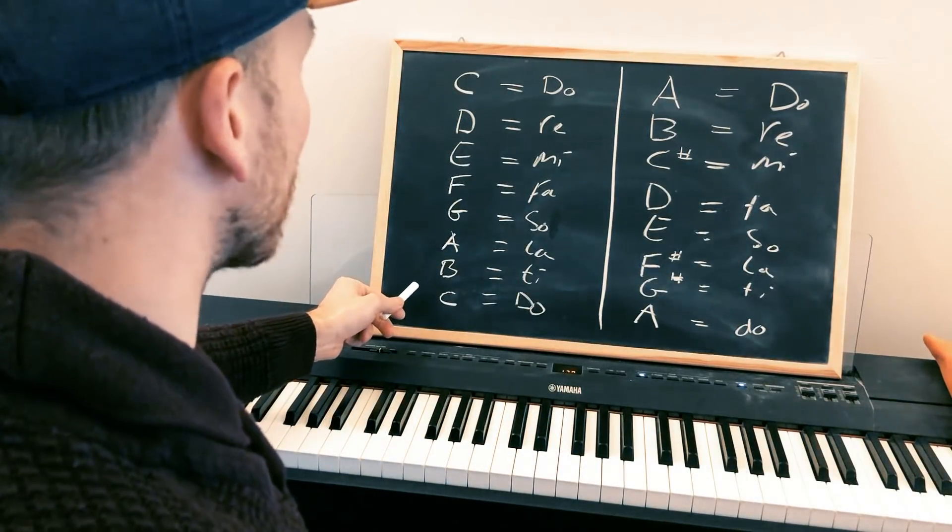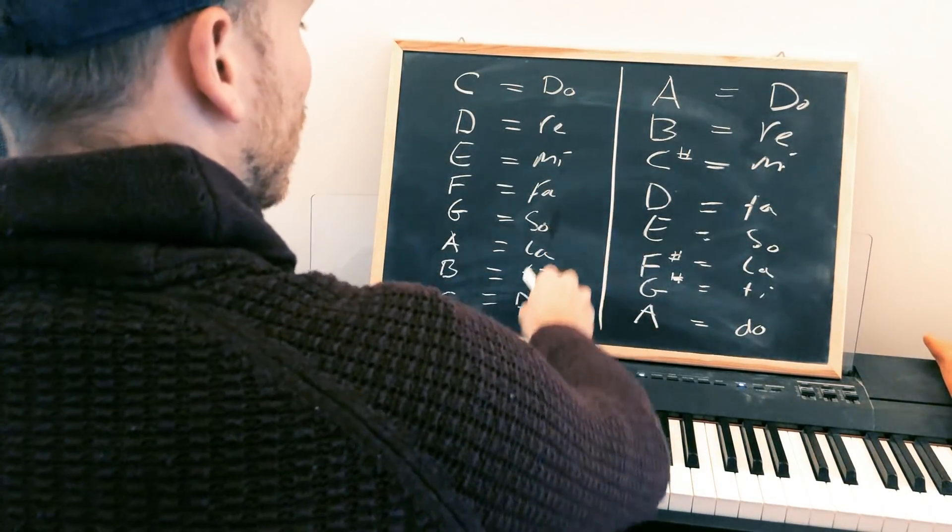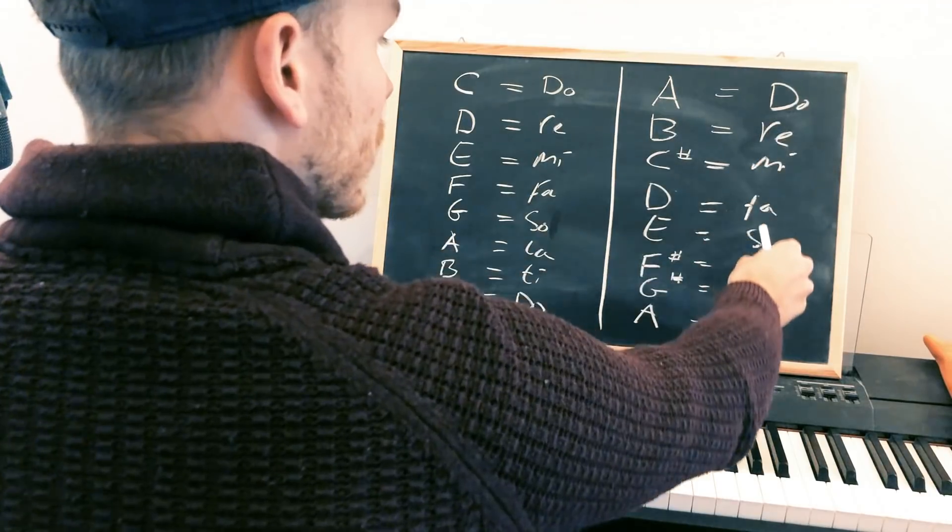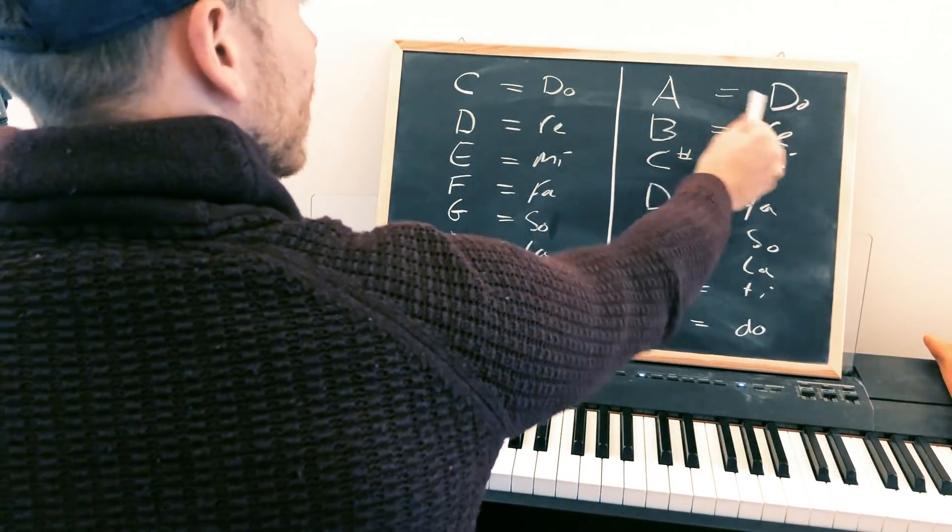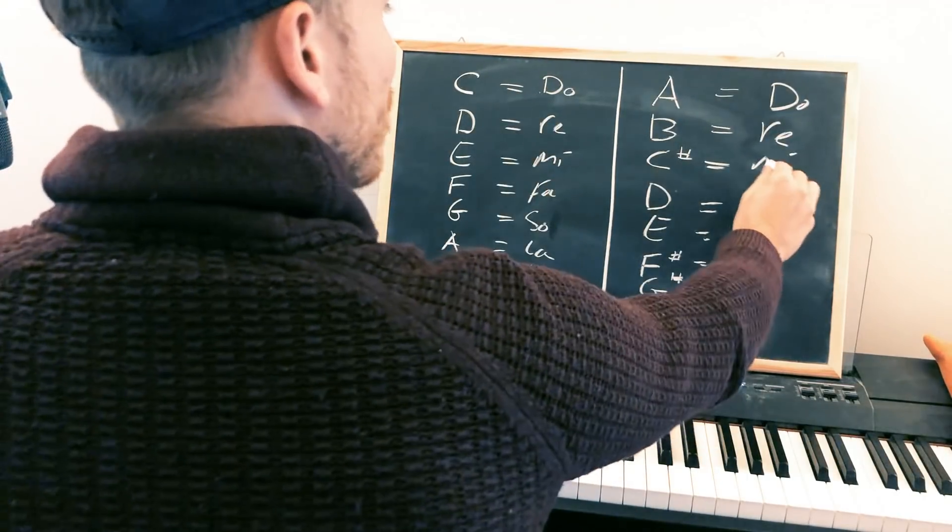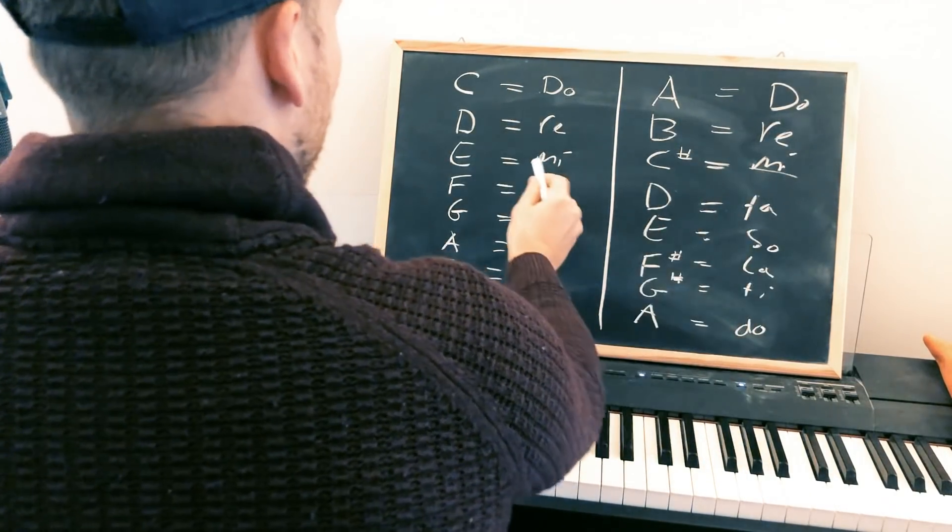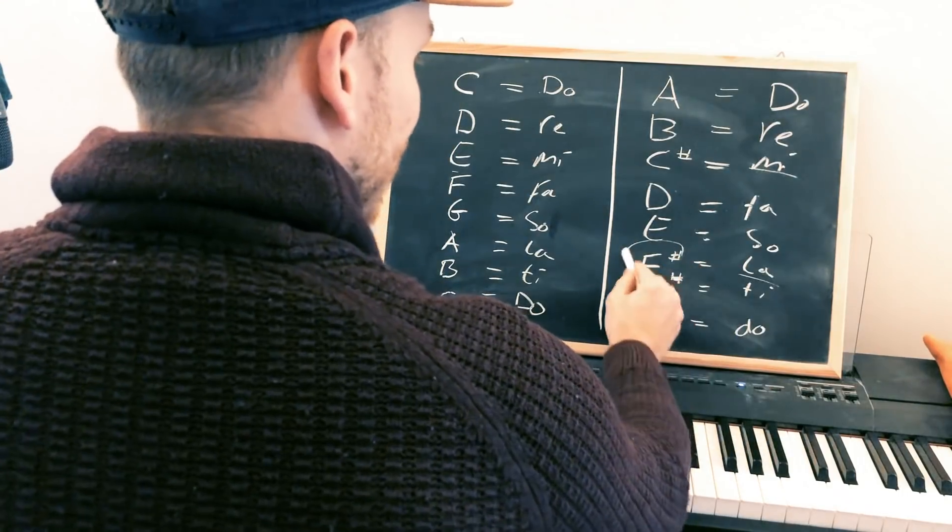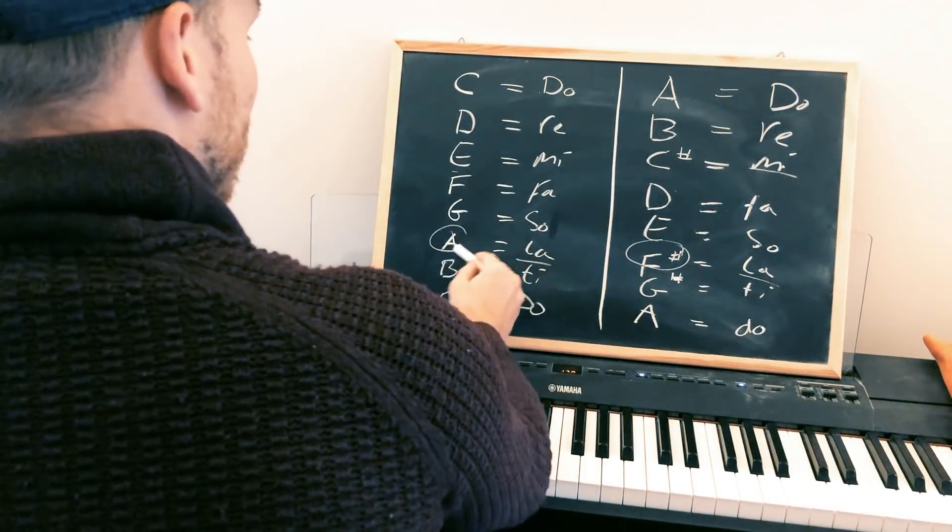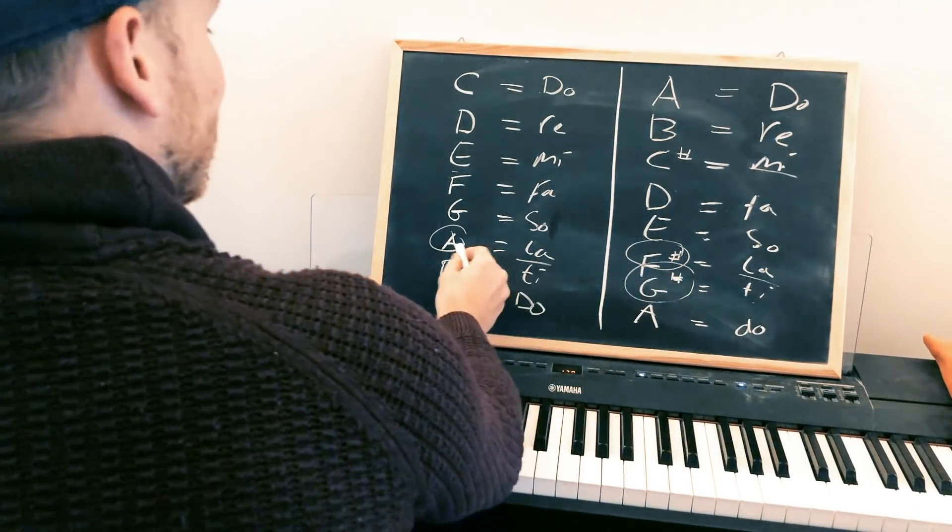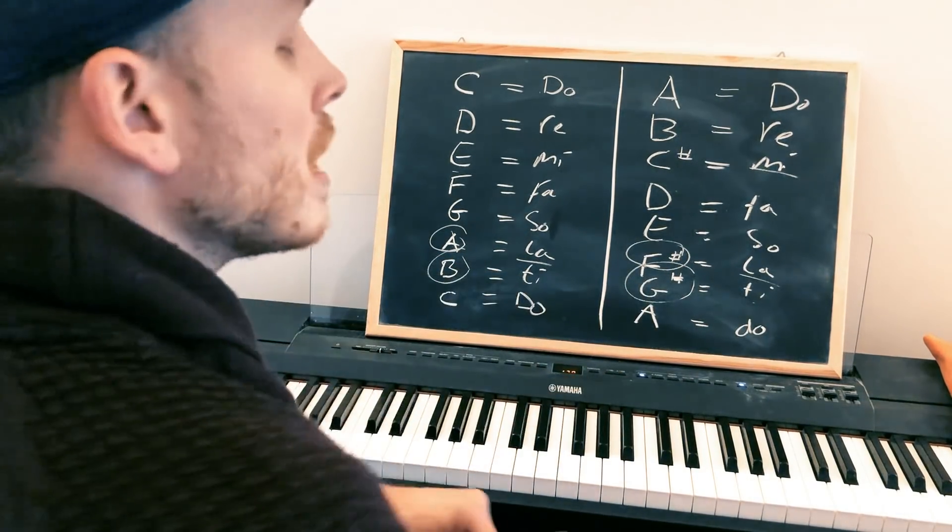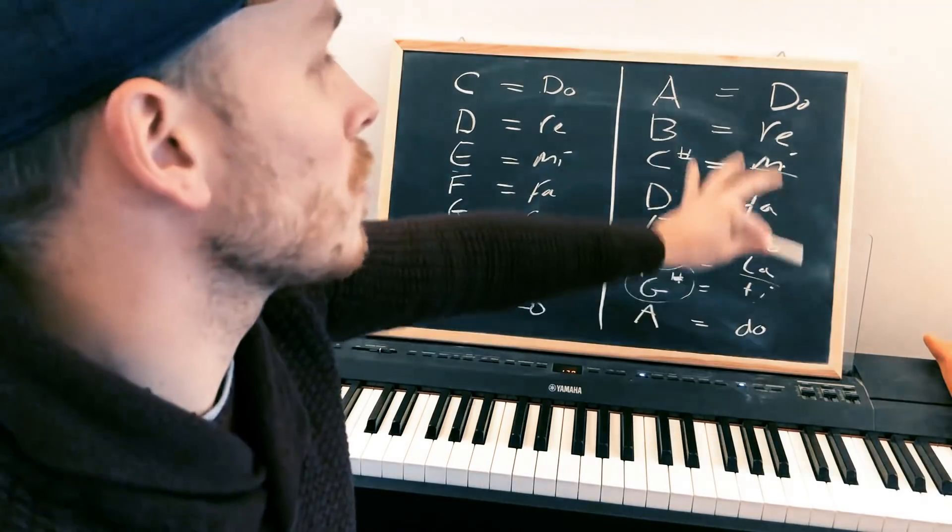So yet again, even though this is something completely different, we have sharps right now and there's no sharps right here. We have Do, Re, Mi, Fa, Sol, La, Ti, Do. And the same here, Do, Re, Mi, Fa, Sol, La, Ti, Do. Yet here the Do is an A. Here the Mi is a C sharp and here it's an E. The La is an F sharp and the La here is an A. The Ti is a G sharp and the Ti over here is a B. And I can do this again with another scale and it will be completely different again.